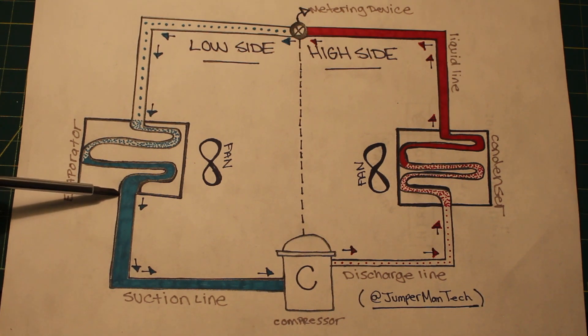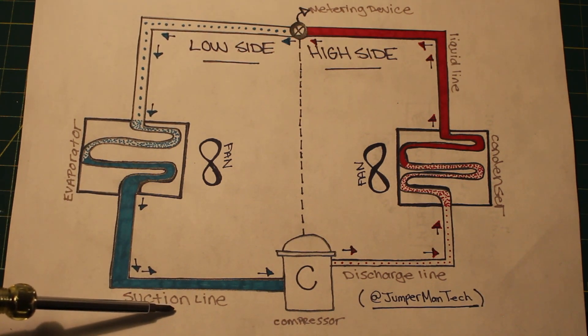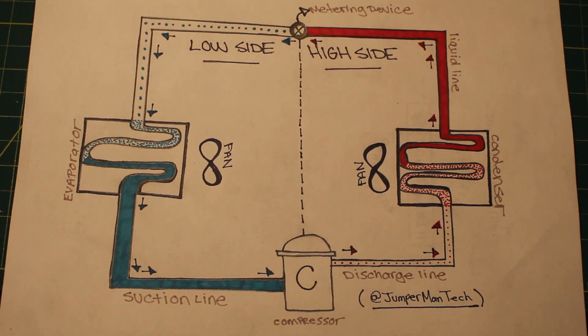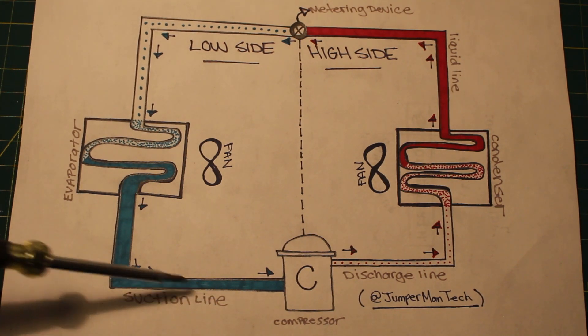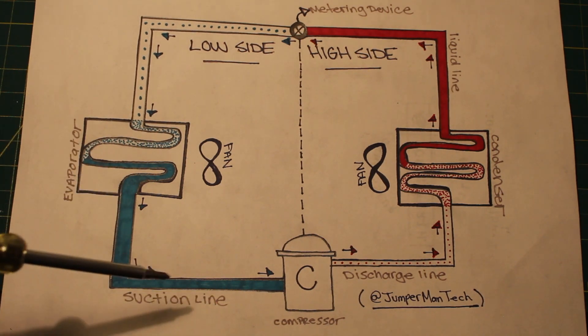As refrigerant leaves the evaporator through the suction line, our refrigerant is now a low pressure, low temperature, superheated vapor. As refrigerant changes state from a liquid to a gas, which occurs midpoint here, this will be our saturation temperature. The temperature increases as it travels down the suction line. The temperature difference is known as superheat.